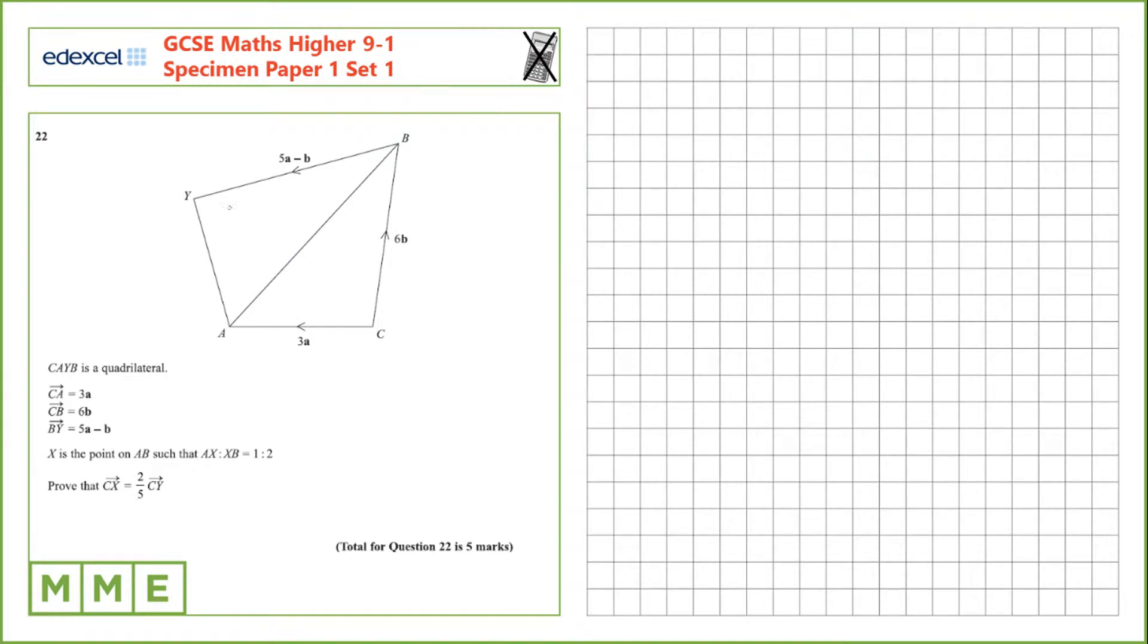Question 22: CAYB is a quadrilateral. We're given that CA is 3a, CB is 6b, and BY is 5a minus b. X is the point on AB such that AX to XB is 1 to 2, so it's somewhere there.